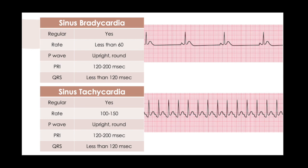What happens if we just change the rate — everything else the same as normal sinus rhythm? If the rate is now less than 60, we call that sinus bradycardia. The P wave indicates it's coming from the SA node as it should, just slower than normal. This is a very well-tolerated rhythm — athletes can have heart rates in the 30s and 40s. Sinus tachycardia is a rate over 100. As you approach 150 and higher, you need to assess whether this is sinus tach or some type of re-entrant tachycardia.